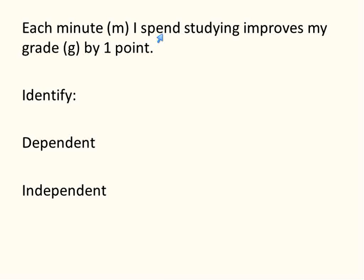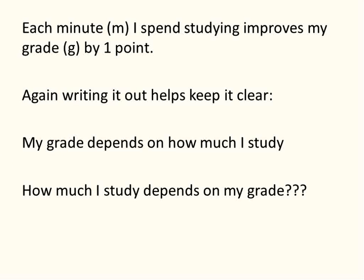Well, this one here might be a little bit more obvious. The number of minutes you spend studying is independent. That you can decide. I'm going to spend this many minutes. That forces your grade to improve. So your independent variable is your minutes studying. The dependent variable is your grade. When you choose to increase your study time, the grade will improve in this scenario. Again, writing it out helps to clarify. My grade depends on how much I study. That makes sense. A little bit of logic reasoning works within this of discovering the dependent and independent variable.